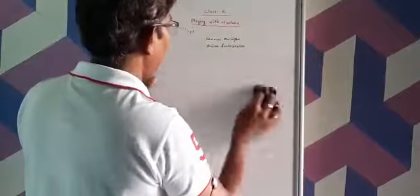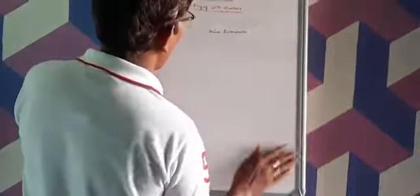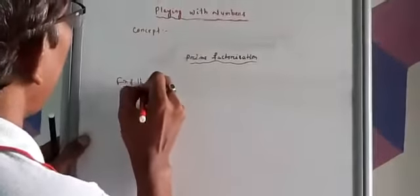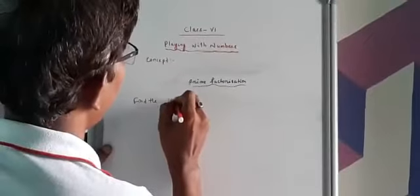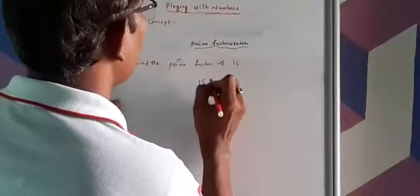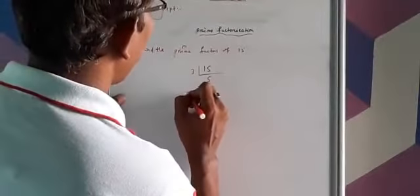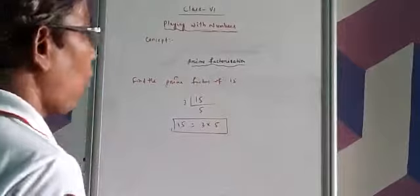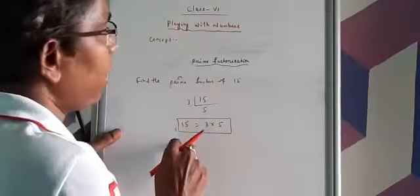Our third concept is Prime Factorization. As we have already discussed, a prime number is a number which has only two factors — that number and 1. We have to find the prime factors of a number. For example, find the prime factors of 15. We write 15, divide by 3 to get 5. So, 15 = 3 × 5. Writing 15 in this way is known as prime factorization.